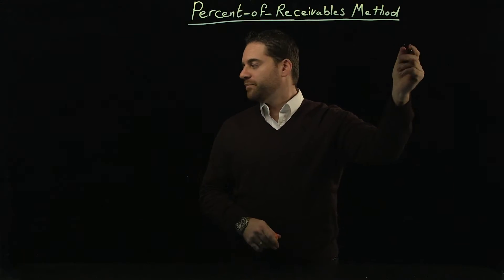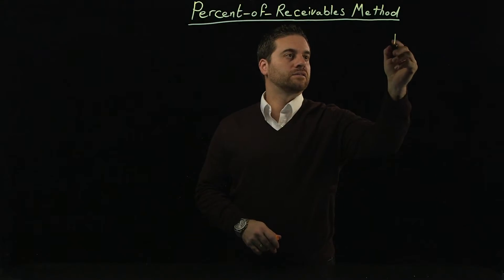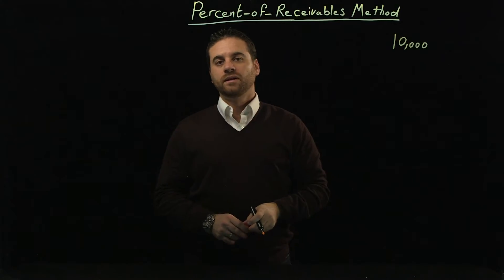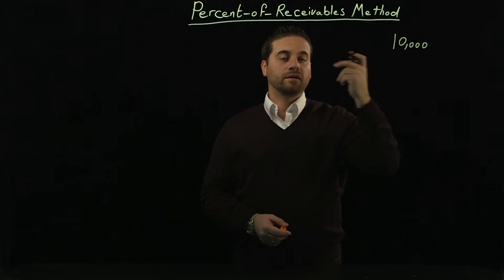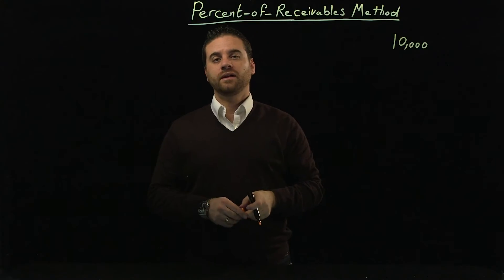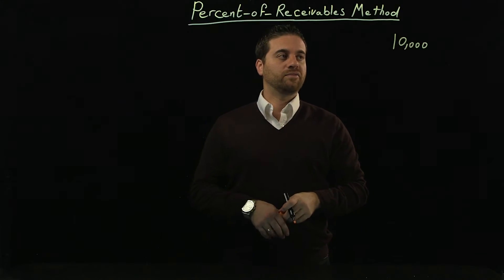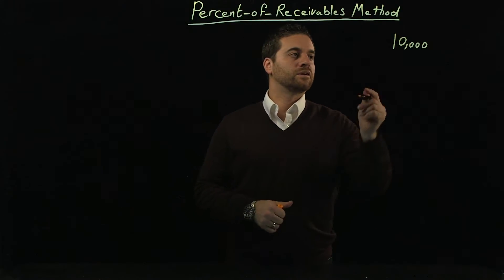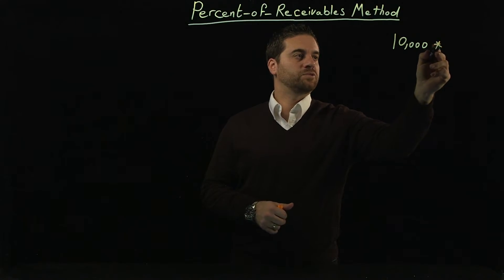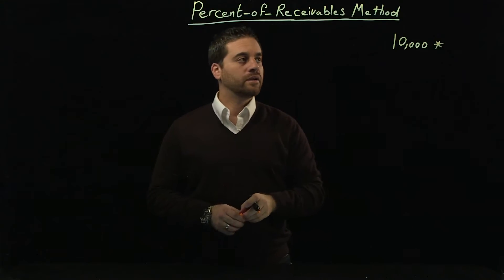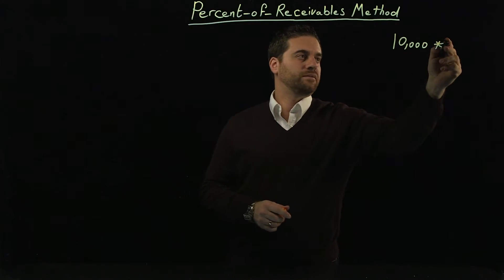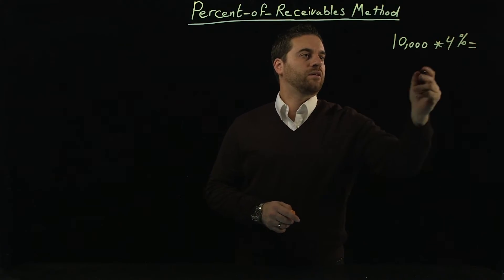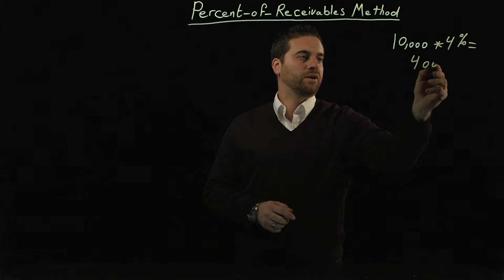Let's say that we have a $10,000 ending balance for accounts receivable, and let's say that the estimate — remember it's an estimate at the end of the day because we're doing that before being 100% sure what amount would be uncollectible — was 4%. So 4% of $10,000 is going to be $400.